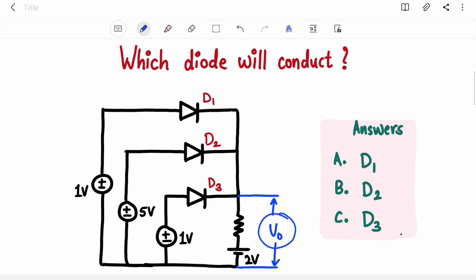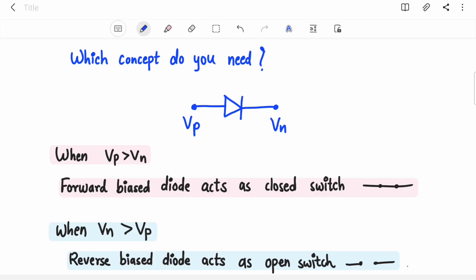Okay, to solve this question we will need one concept, a very simple concept. So there are two terminals of diode, Vp and Vn, positive and negative. When voltage at positive terminal is greater than voltage at negative terminal, it will act as closed switch, it will be short circuit.